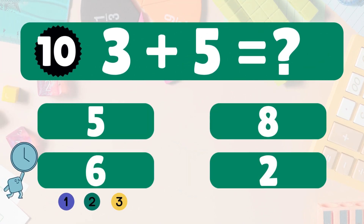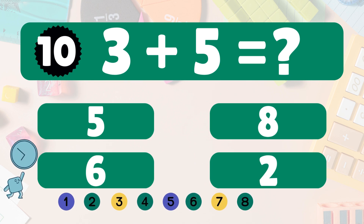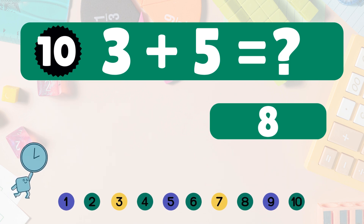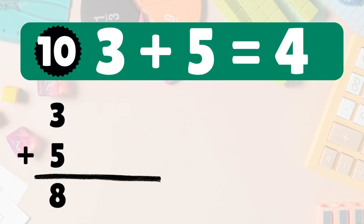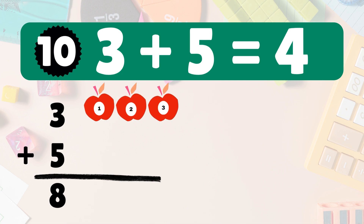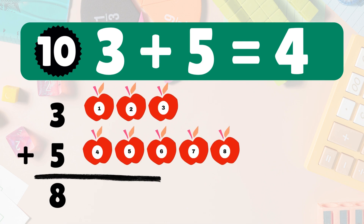3 plus 5 equals what? 3 plus 5 is 8. 3 apples. Add 5 more. Let's count together. 1, 2, 3, 4, 5, 6, 7, 8. So 3 plus 5 is 8. Woohoo. Next.